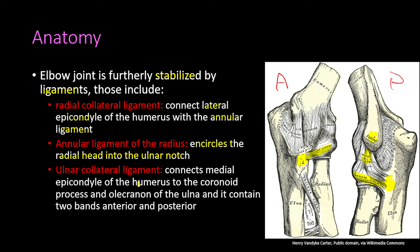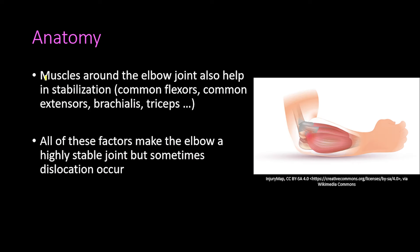We also have the ulnar collateral ligament, which connects the medial epicondyle of the humerus to the coronoid process and the olecranon of the ulna. It contains an anterior band and a posterior band and is the largest of the three ligaments. On the anterior view we can see the ulnar collateral ligament and its anterior band, and on the posterior view we see the posterior band.